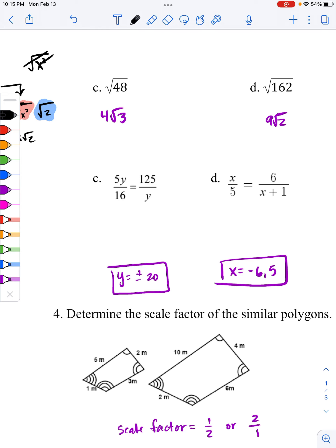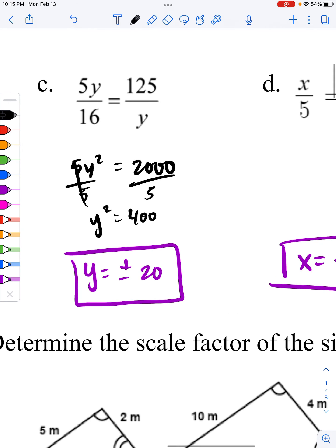Here, at letter c, this is very, very important. When you cross multiply, y times y is y squared. So we have 5y squared is equal to 125 times 16 is 2,000. And we need to get y by itself. So we divide both sides by 5. Y squared is now equal to 400.